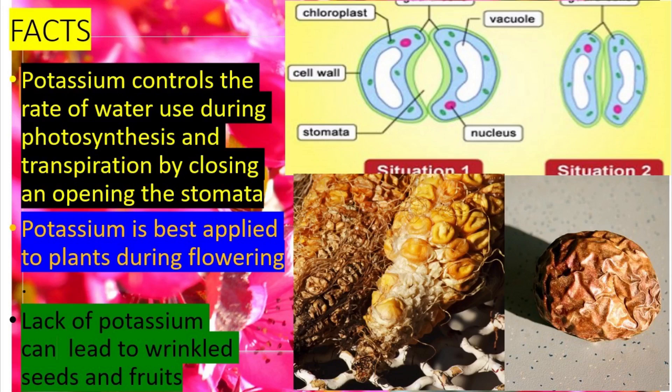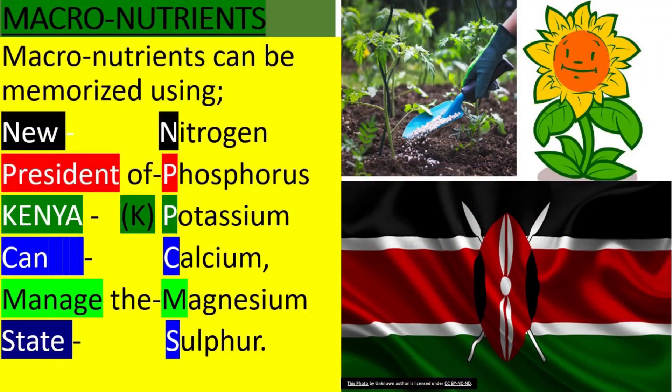Facts: potassium controls the rate of water used during photosynthesis and transpiration by closing and opening the stomata. Potassium is best applied to plants during flowering. Lack of potassium may lead to wrinkled seeds and fruits. The other nutrients can be memorized using the mnemonic: New President Of Kenya Can Manage The State.